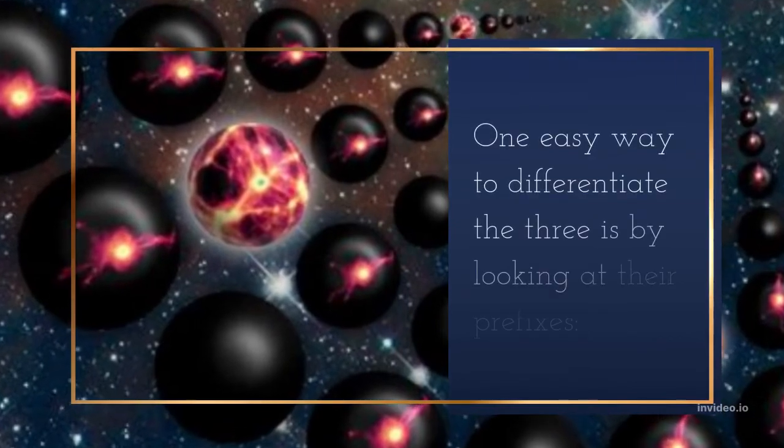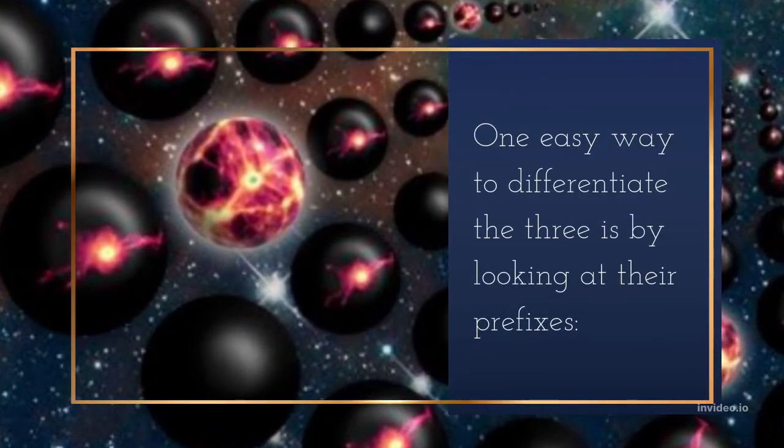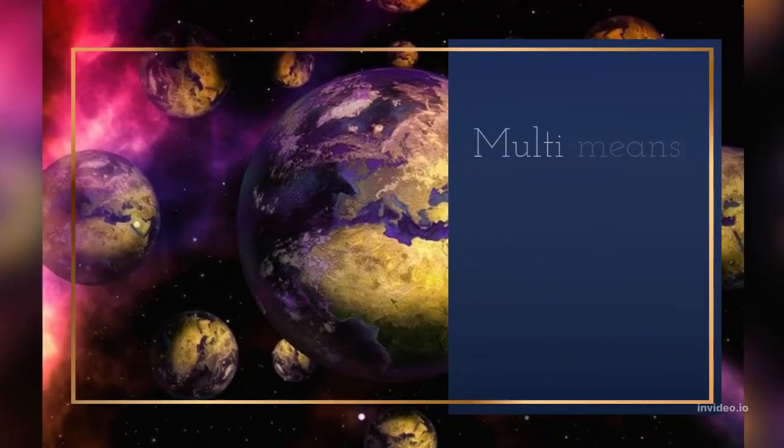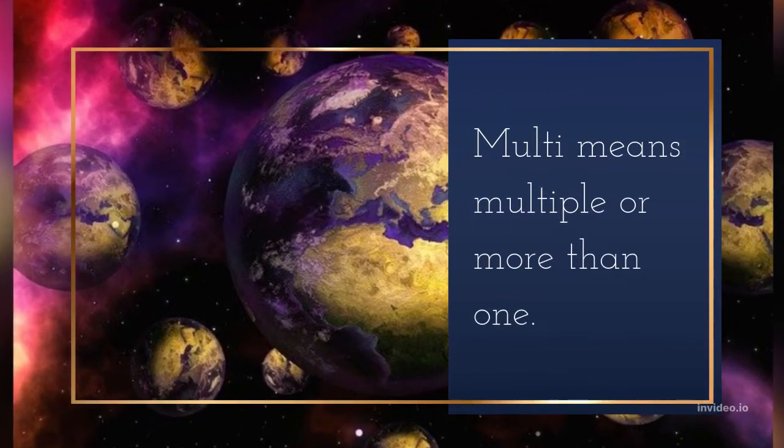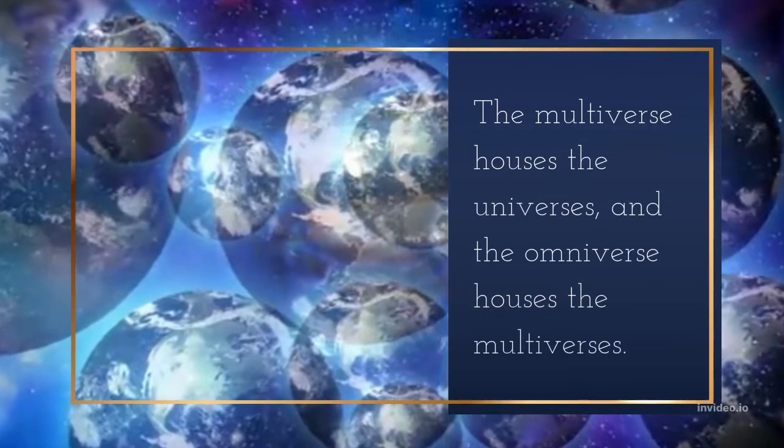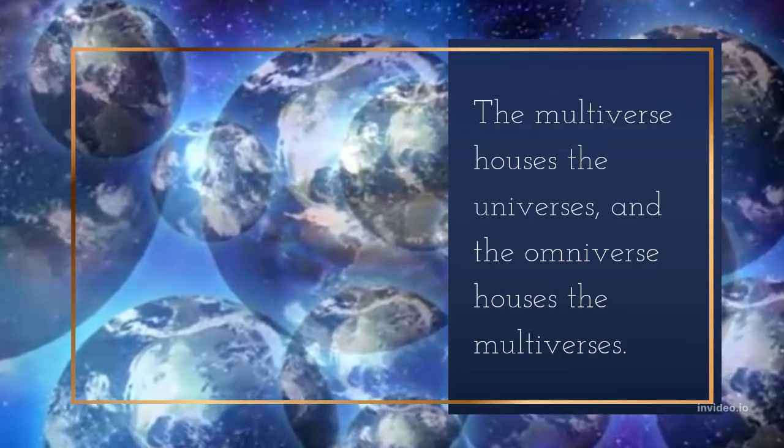One easy way to differentiate the three is by looking at their prefixes. Uni means one. Multi means multiple or more than one, and omni means all. The multiverse houses the universes, and the omniverse houses the multiverses.